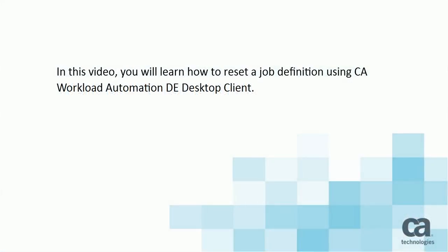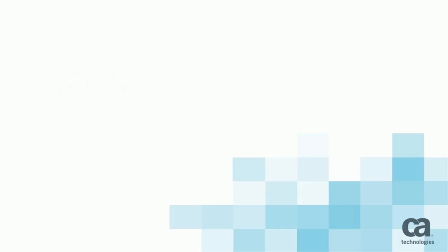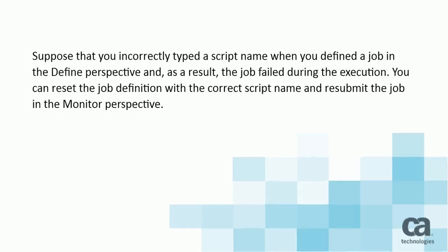In this video you will learn how to reset a job definition using CA Workload Automation DE Desktop Client. Suppose that you incorrectly typed a script name when you defined a job in the defined perspective and as a result the job failed during the execution. You can reset the job definition with the correct script name and resubmit the job in the monitored perspective.